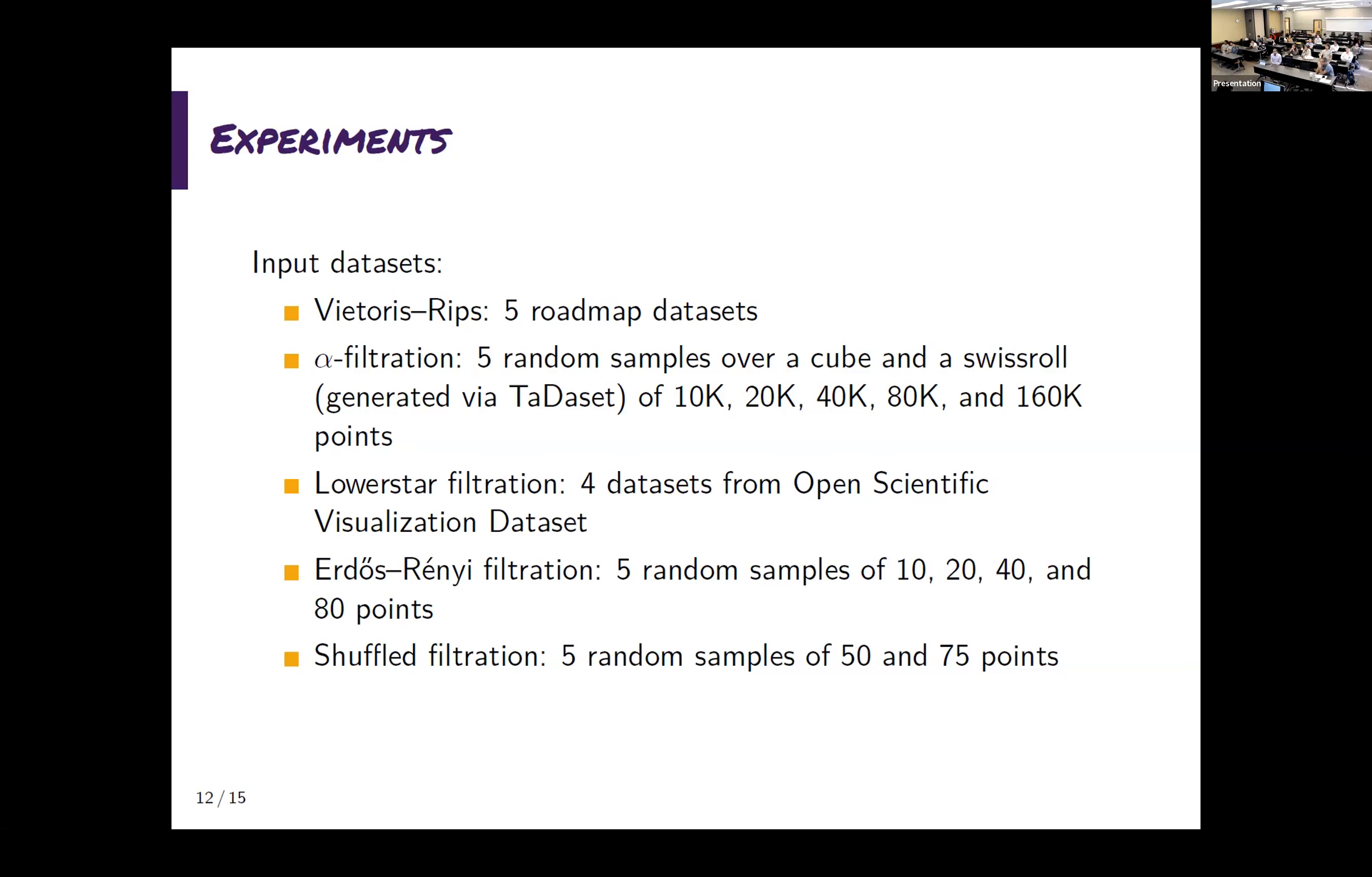And then we took 10,000, 20,000, 40,000, 80,000, 160,000 points out of it. We computed and counted over it. The lower-star filtration means a cubical complex over images taken from the open scientific visualization dataset. And then the last two are random filtrations. The other training one is I'm taking all the points with a random order, and then I'm taking the edges with a random order. And every time I have three edges that form triangles, I put also the triangles and every higher clique. Shuffle filtration is as random as you can get. Random order on the vertices. Afterwards, random order on the edges. Afterwards, random order on the triangles. It's just going up in dimensions. So we are sure that there's always a filtration.